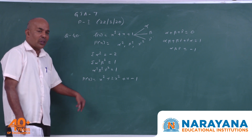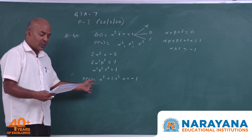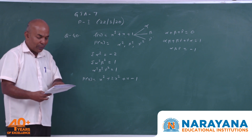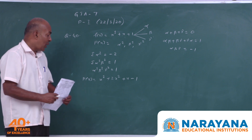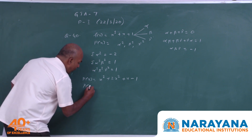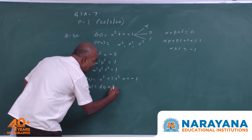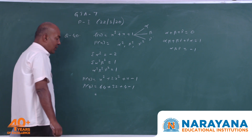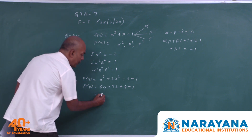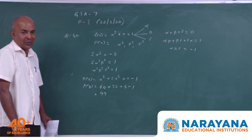Checking option A: p(4) = 64 + 32 + 4 − 1 = 99, which is divisible by 11. So option A is correct.